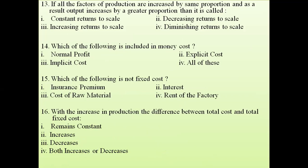Question 13: if all factors of production are increased by the same proportion and as a result output increases by a greater proportion, this is increasing returns to scale. If factors increase in the same proportion but output increases by a lesser proportion, it is decreasing returns to scale. If both increase in the same proportion, it is constant returns to scale. Since output increases by a greater proportion here, it is increasing returns to scale.